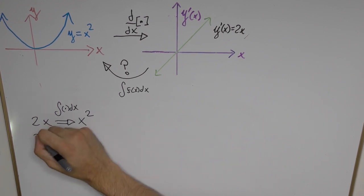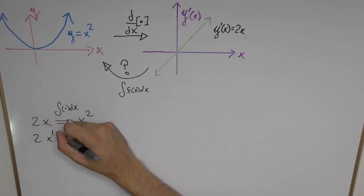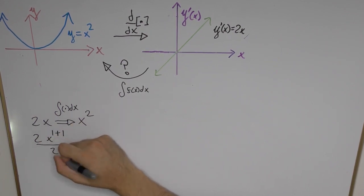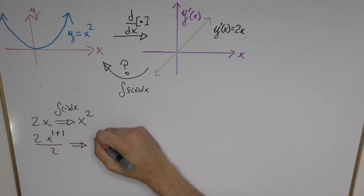So here what we want to do is we want to increase the power by one unit, so we're going to add 1 to the power and we're going to divide the function by 2, and in doing so we're going to get all the way back to x squared.